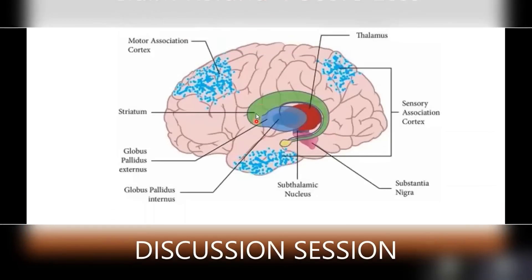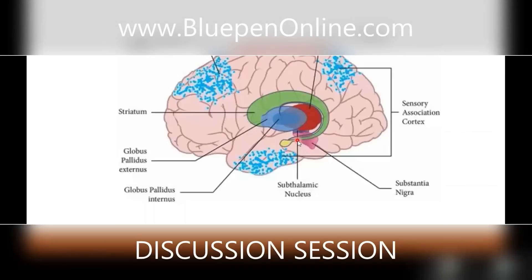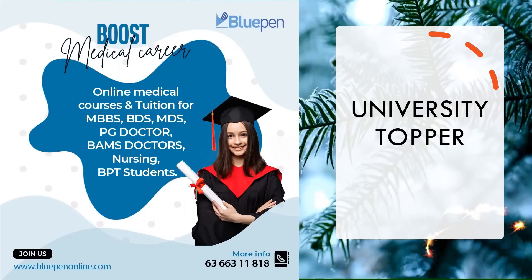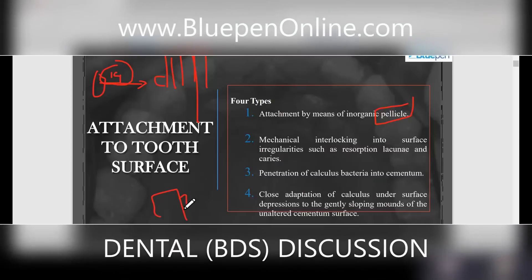This entire mass forms the basal ganglia, and the green part is the corpus striatum with the caudate nucleus. Then comes the substantia nigra, and they can get adhered to this pellicle.